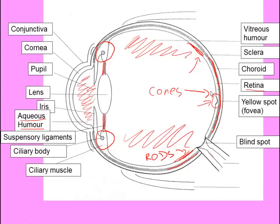The rod distribution is either side of the yellow spot. When you are looking directly at something, light falls on the yellow spot where the cones are — great for normal light intensity, but in very dark conditions your cones are not that good at detecting light. So if you want to look at a star in a night sky, you are much better off looking slightly to the side of it — light from that star will then fall on the rods rather than the cones, and it will appear brighter. The blind spot is the region at the back of the eye where there are neither rods nor cones, hence it is called the blind spot.